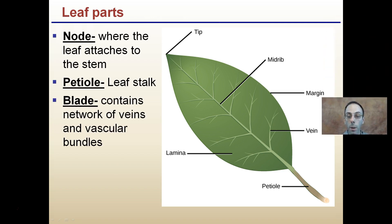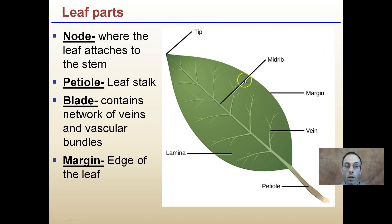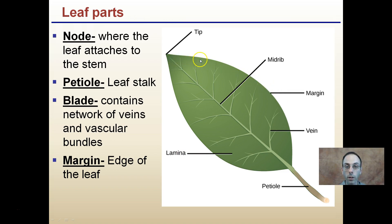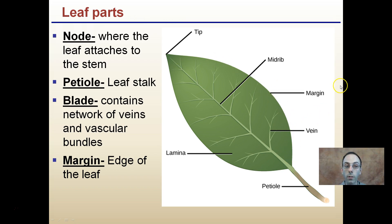Looking at macroscopic leaf parts you may be more familiar with: the node is where the leaf attaches to the stem. The petiole is the leaf stalk. The blade contains a network of veins in vascular bundles, and the margin is the very edge of the leaf. The midrib is very strong, and the tip is the very end. The margin is particularly important for identification purposes, which we may explore in a lab.